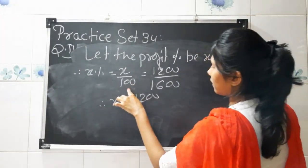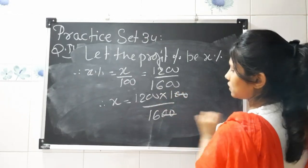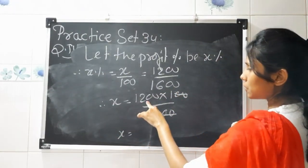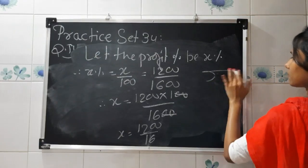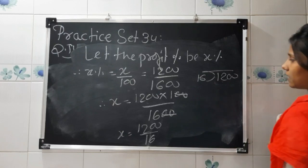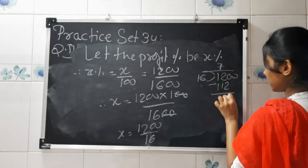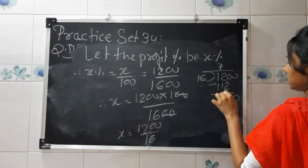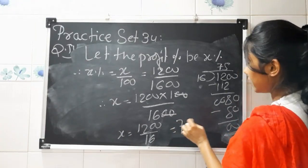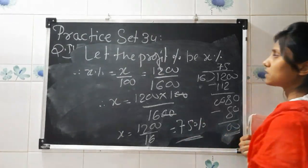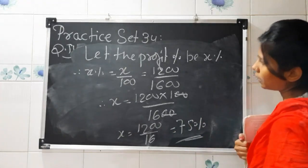By cross multiplication, X equals 1200 multiplied by 100 upon 1600. Cancelling the zeros, we get 1200 upon 16, which equals 75. Therefore, the profit percent of Mr. Mehta is 75% and the profit earned is rupees 1200.